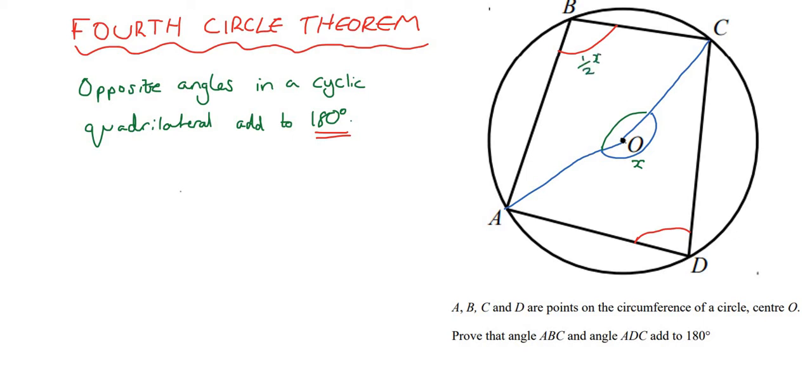Right, so remember in that circle theorem, if we have something like this, where this is the center, and these points touch the circumference, this angle is 2X and this angle is X. And that's what circle theorem one tells us. Right, where this is a circle.